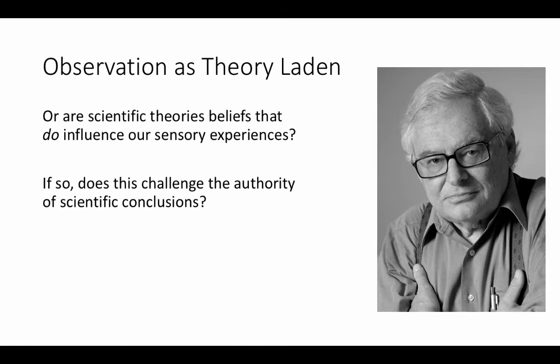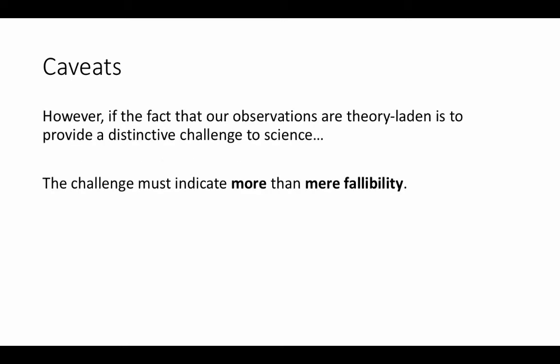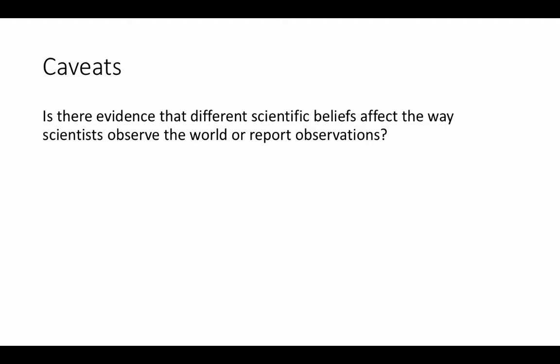Here are some caveats. Our observation reports are always fallible, but we can correct for that much of the time. However, if the fact that our observations are theory-laden is to provide a distinctive challenge to science, then the challenge must indicate more than mere fallibility. We need evidence that different scientific beliefs affect the way scientists observe the world or report observations — and if there is such evidence, is that a threat to the objectivity of science?